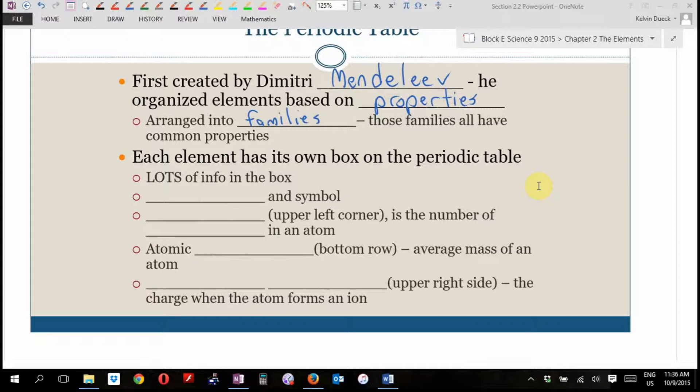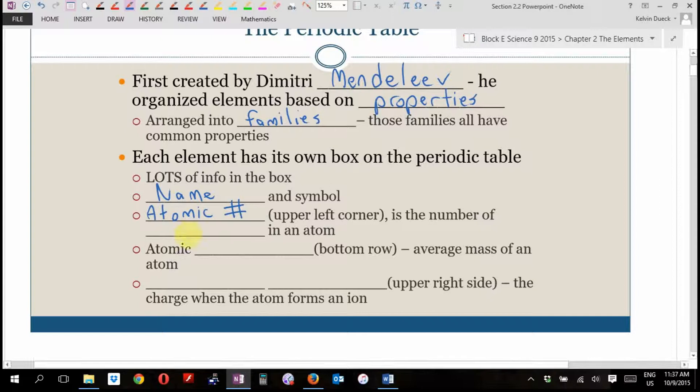Each element has its own box on the periodic table. And there's lots and lots of information in that box. The first thing, which is pretty obvious, I think in each box there's the element's name and its symbol. Then we have something that we call the atomic number. That's the upper left corner. So right now, can you find oxygen on your periodic table? And can you tell me its atomic number? Eight. It's the eighth element on the periodic table.